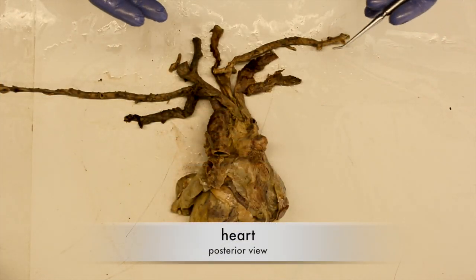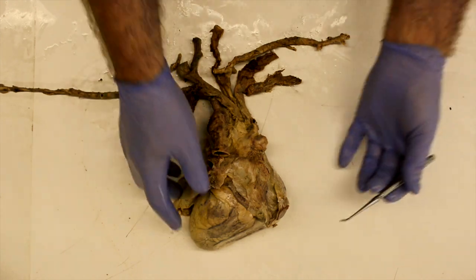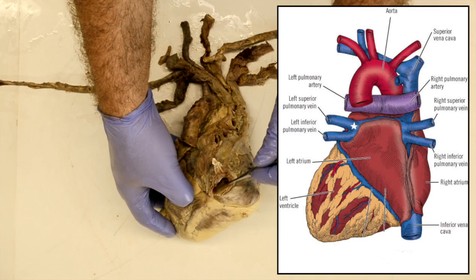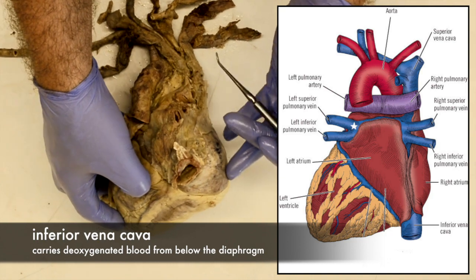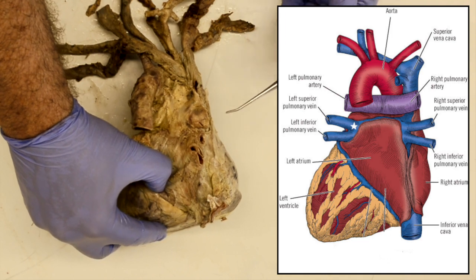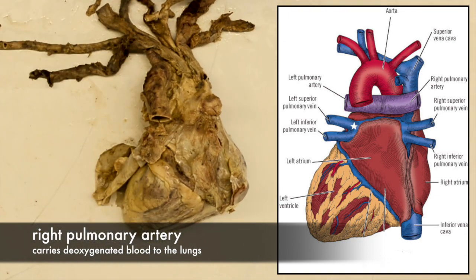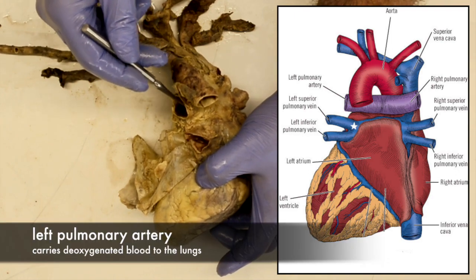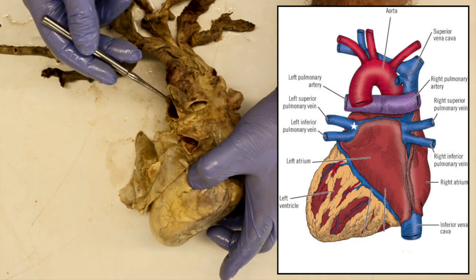This is the posterior view of the heart, where we can highlight some of the other vessels entering and exiting. This large vein here is the inferior vena cava, which drains blood from below the diaphragm. We also have two branches from the pulmonary trunk: the right pulmonary artery and the left pulmonary artery, which carry deoxygenated blood from the right ventricle to the lungs.